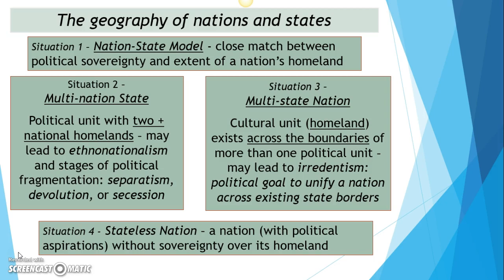Situation four — the stateless nation — the classic example most books use are the Kurds. The Kurds are an ethnic group with a homeland spanning four or five countries: Iraq, Iran, Syria, and Turkey. It's a fairly large homeland with its own culture and language, but they don't have control over it. They've been fighting in each of those countries to develop that control, with varying degrees of success — fairly successful in Iraq having their own region, but literally being bombed in Syria and Turkey and having to fight national armies.